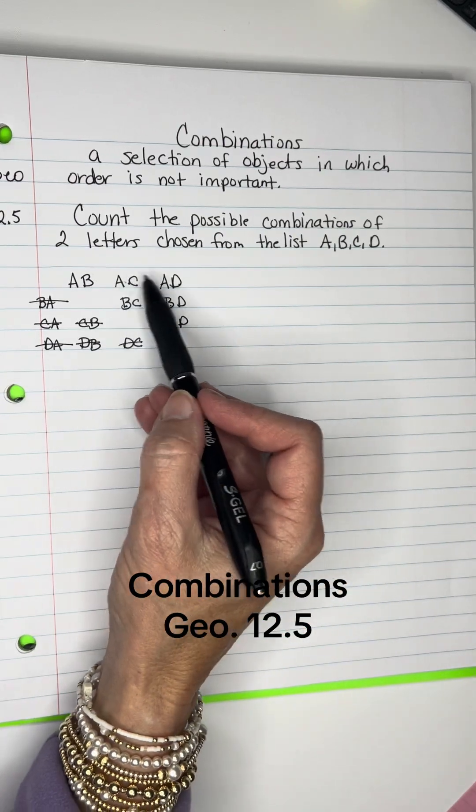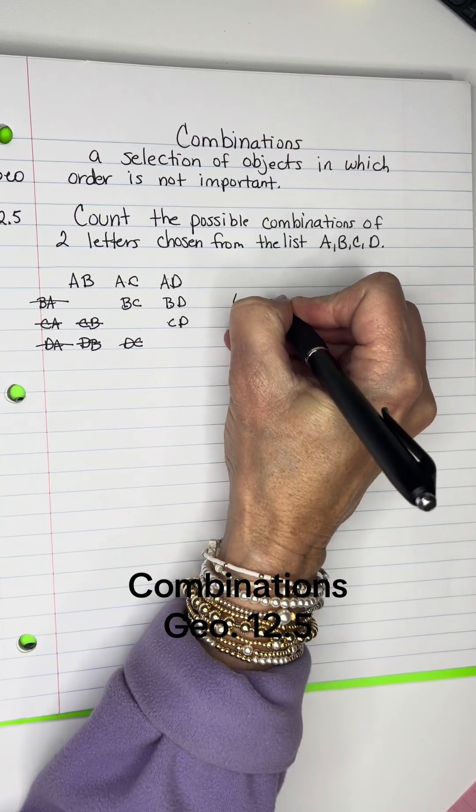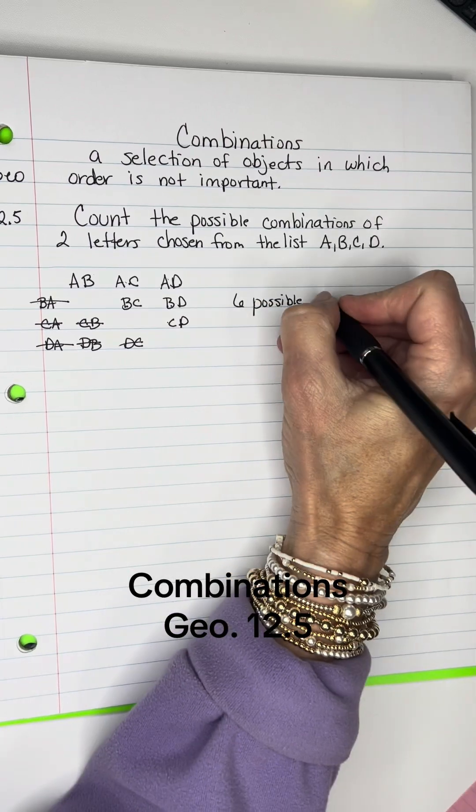So one, two, three, four, five, six. I have six possible combinations.